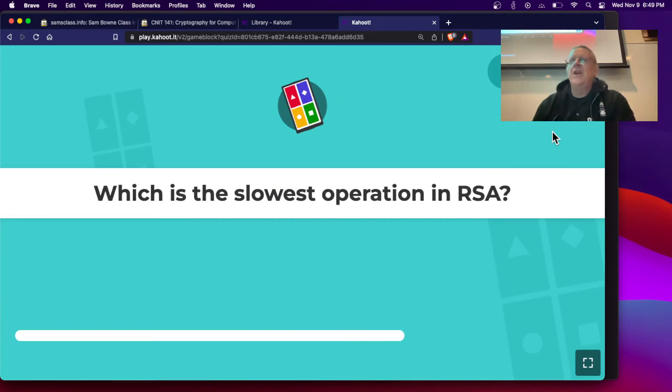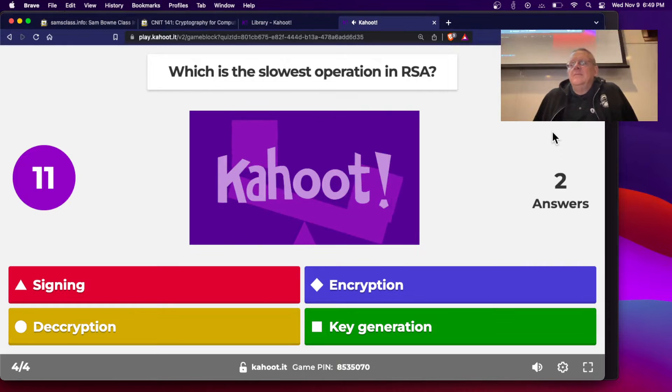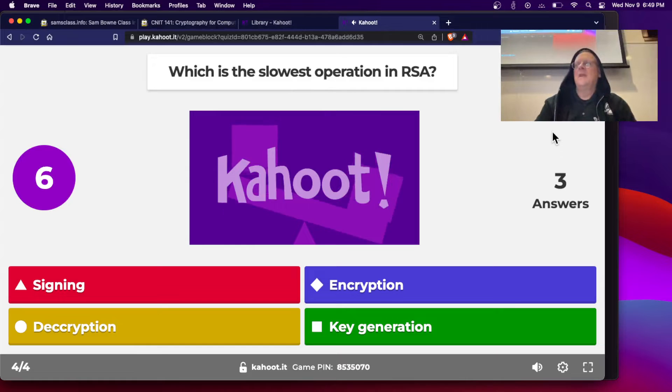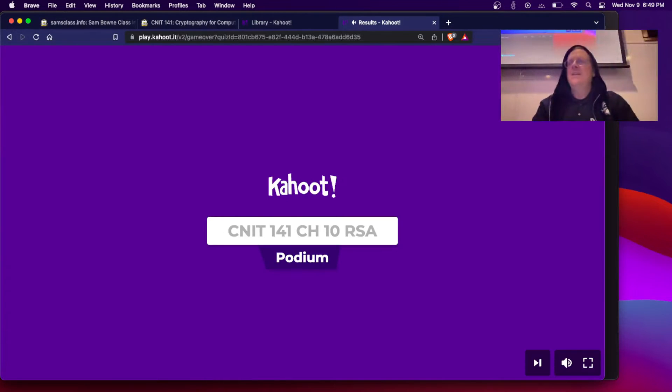And what's the slowest operation in RSA? And generating the key is the slow process, because it's a random process. You have to hunt for prime numbers. The rest of these are just calculating formula, but key generation is slow. All right.